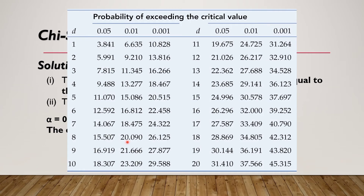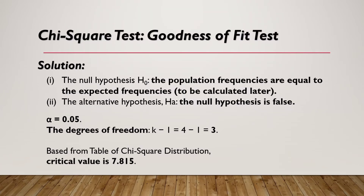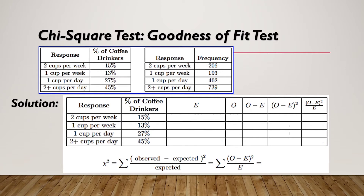With alpha equal to 0.05 and degrees of freedom equal to 3, our chi-square critical value from the table is 7.815. Going back to our data, we have two cups per week, one cup per week, one cup per day, and two-plus cups per day with their respective percentages. For the expected values, we multiply each percentage by the number of respondents, which is 1,600.